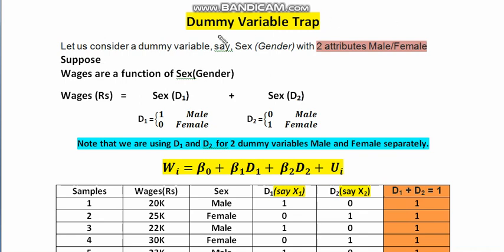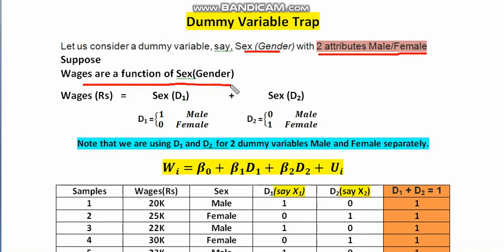Suppose we have a dummy variable for sex or gender with two attributes — male and female. We want to fit this into a multiple regression model to determine whether gender affects the wages that people earn.